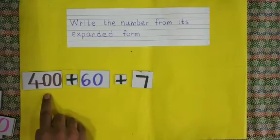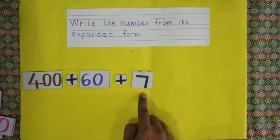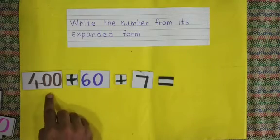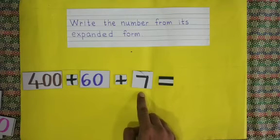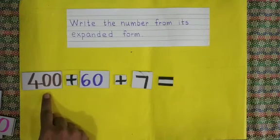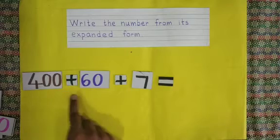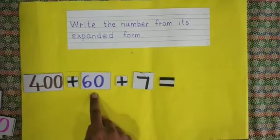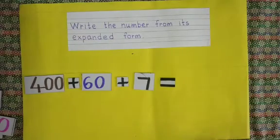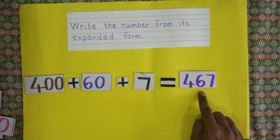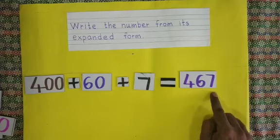4 hundreds, 60 and 7 — that means 4 hundreds are given, 6 tens are given and 7 units are given. I have given the technique: read these two numbers together. Four hundred and sixty-seven. Write the number: 4 hundreds, 6 tens and 7 units = 467.